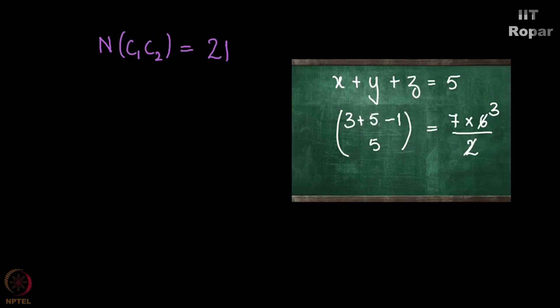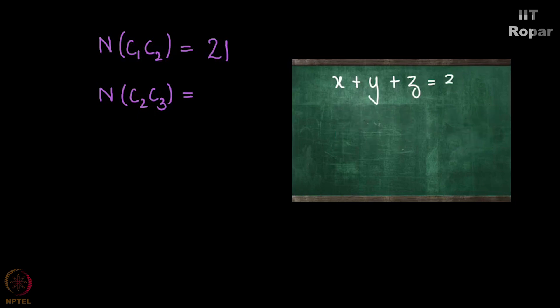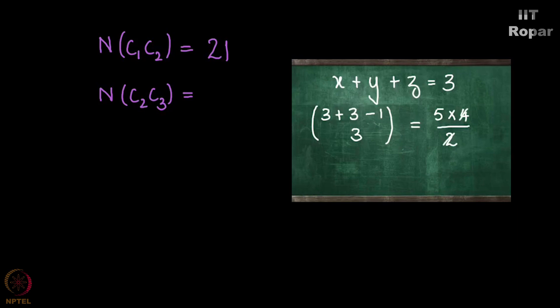n of C2∩C3 gives x plus y plus z equals 3, obtained by removing 8 plus 9 which is 17 from both sides of the original equation. The number of solutions for this is 3 plus 3 minus 1 choose 3, which is 5 choose 3, and solving this we get it as 10. So n of C2∩C3 is 10.